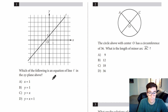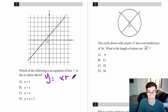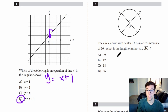Number one: which of the following is the equation of line L in the XY plane above? It's going to be Y equals something X plus something. Let's start with the intercept that hits at plus one, so we're going to have a plus one there. The slope — we go one up, one right — one over one is just one, or X. So our answer is Y equals X plus one. That's going to be D.